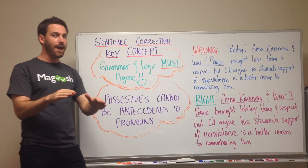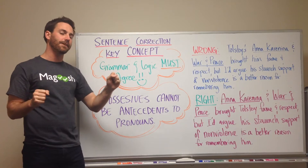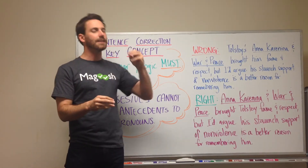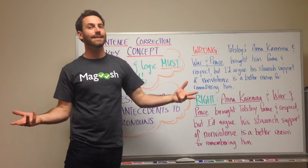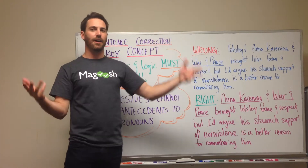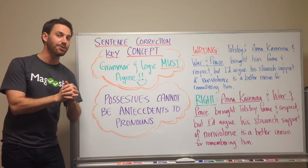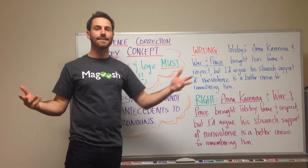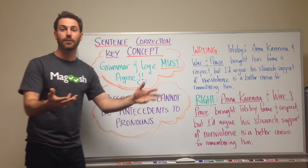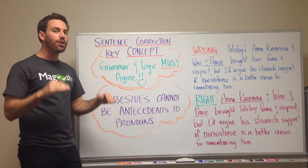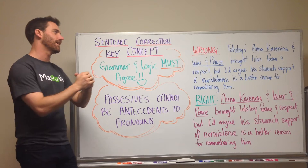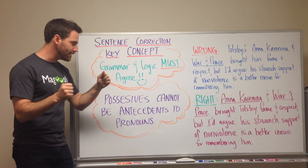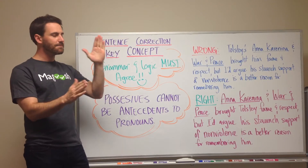Before we dive right in, there is a key concept we need to remember when dealing with sentence corrections. It's hard to keep in our minds because our minds are really good at making sense of things, especially when not a lot of information has been given. We can fill in the gaps really well, make inferences, and make sense of what we're reading regardless of what is there. And that is actually going to hurt us on the GMAT, because the key concept is: grammar and logic must agree.